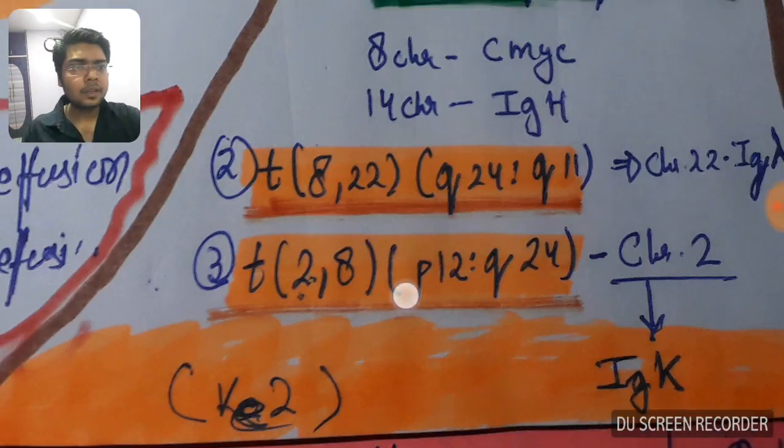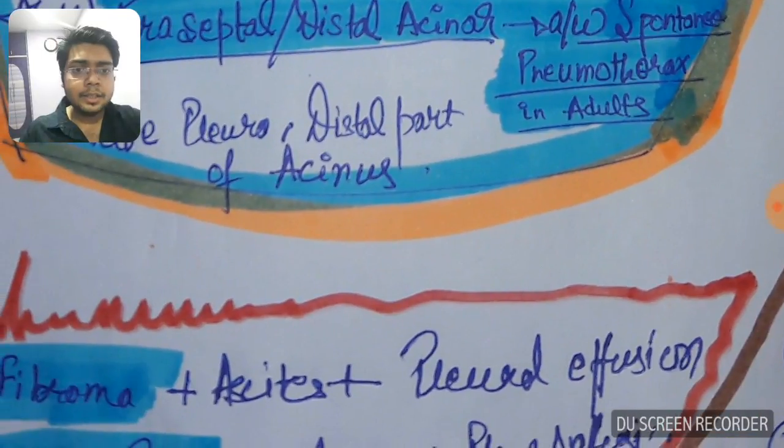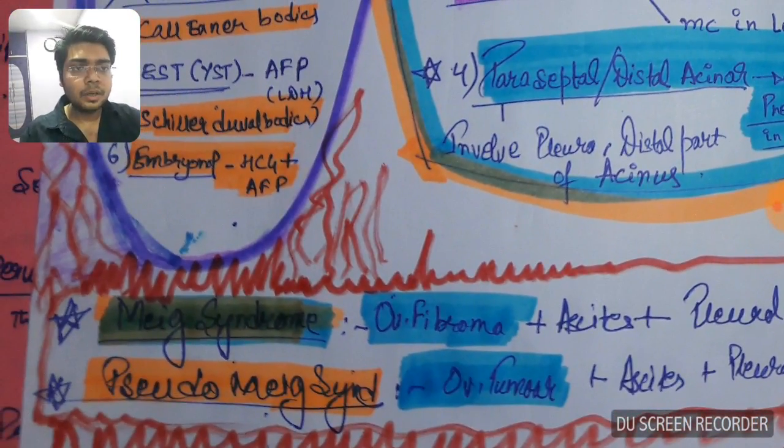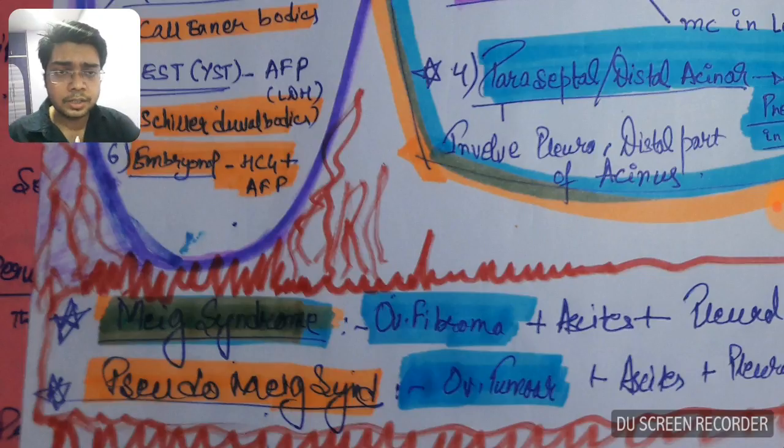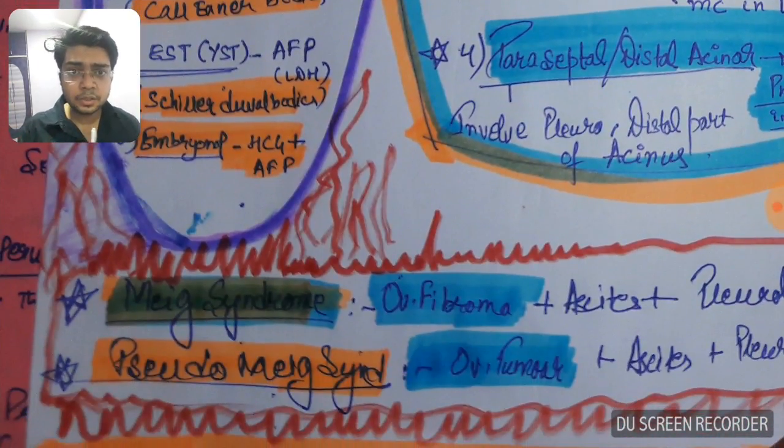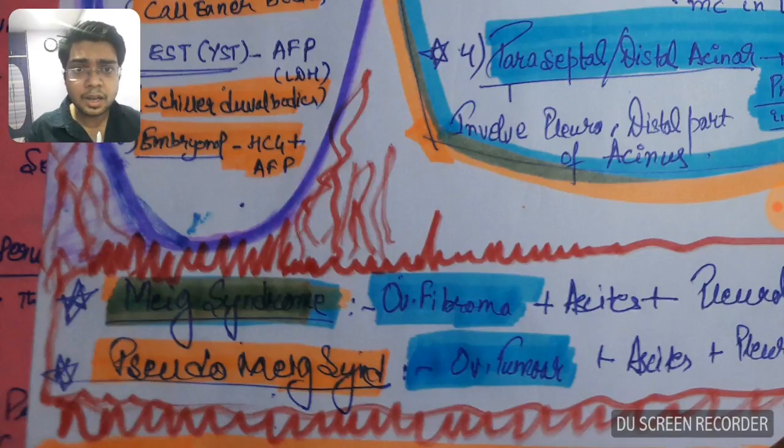The very, very frequently asked, I think the second most important in this chart in this high yielding stuffs part 5, is the Meigs and pseudo-Meigs. They frequently ask what is pseudo-Meigs, what is Meigs.